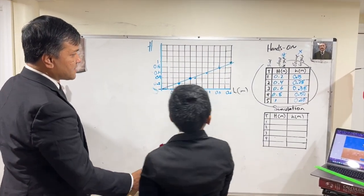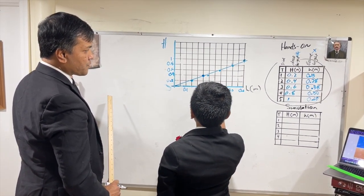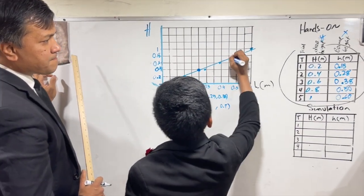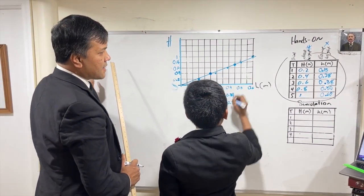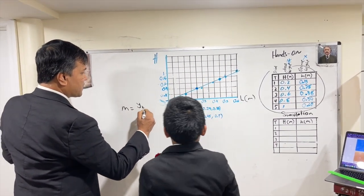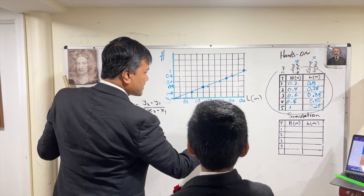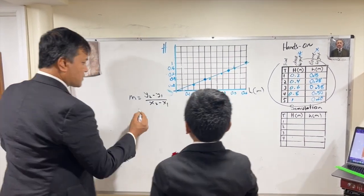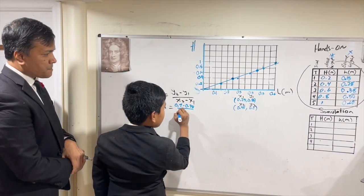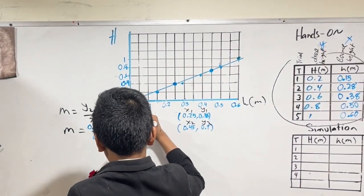So we have point number one — write it. Let's say that's 0.25 comma 0.4. And we also have 0.45. Now, slope is equal to y2 minus y1 over x2 minus x1. This is your x1, this is your y1, this is your y2. So this is like a ratio. 0.7 minus 0.38 over 0.45 minus 0.25 equals 1.6.